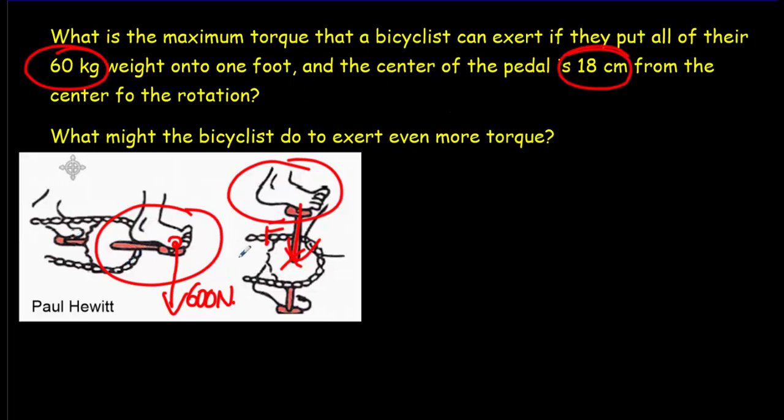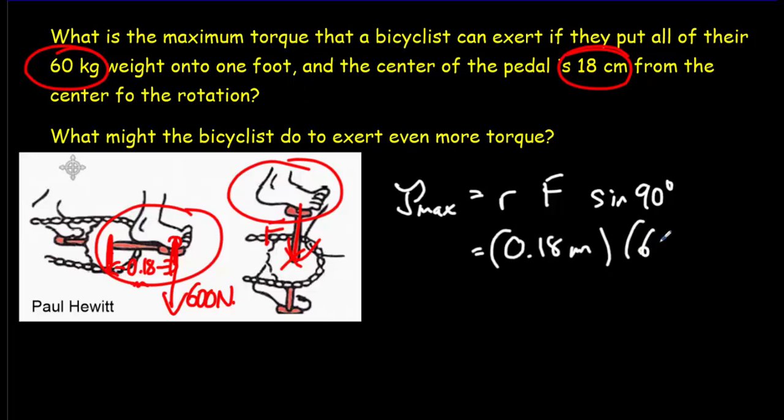Now to calculate how big that torque is going to be, we know the lever arm distance from here to here is 0.18 meters. So to calculate our maximum torque, take the lever arm distance, multiply it by that force times the sine of 90 degrees, which is simply one. So it will be 0.18 meters times 600 newtons, giving you approximately 110 newton meters.